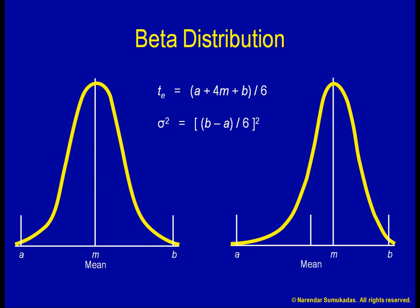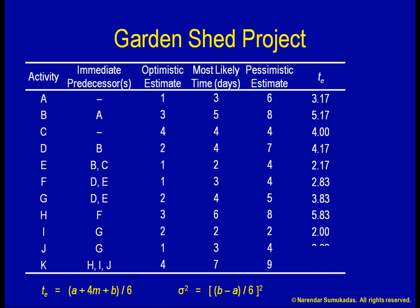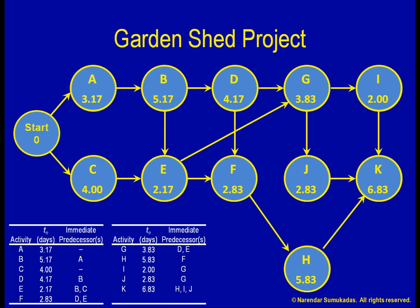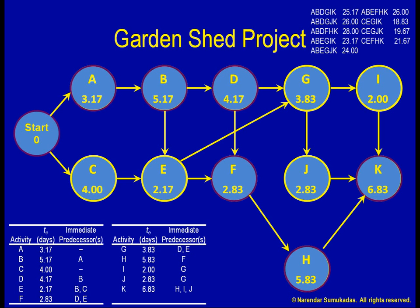I proceed to calculate the expected time durations for my project activities. I can now plug these TE values into my network diagram. Evaluating all the paths as before, I see that the critical path is still ABDFHK, which takes 28 days.